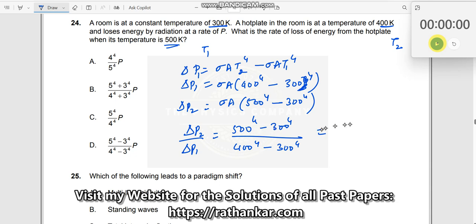Now you see there is a 100 common here. So I will remove this, 100 to the power of 4 times 5 power 4 minus 3 power 4, divided by 100 to the power of 4 times 4 power 4 minus 3 power 4.